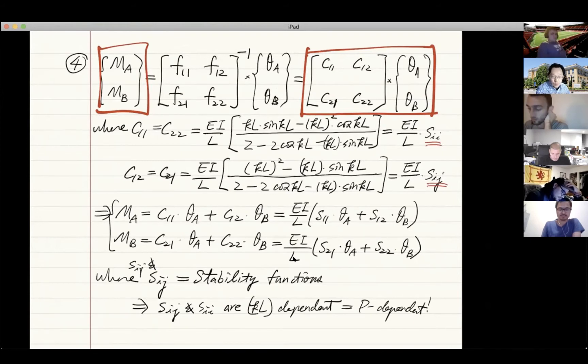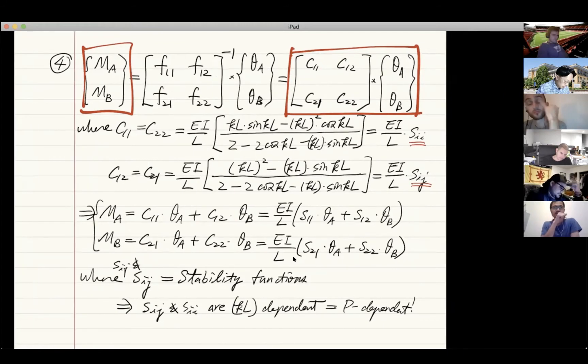In that sense, of course, sii and sij are also p dependent. Now we have arrived at expressions, the first two expressions for the slope deflection equations, which is these two.